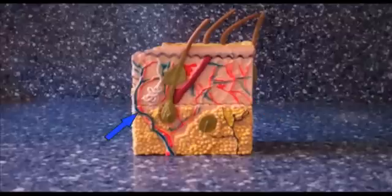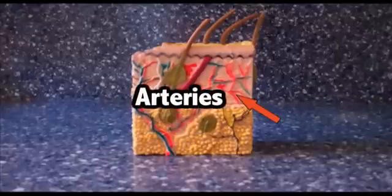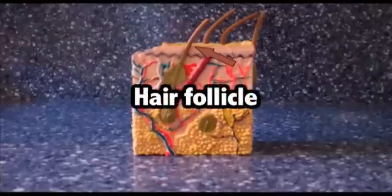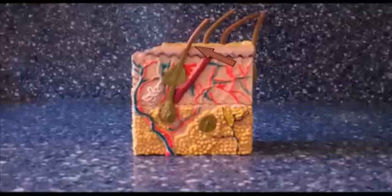These red and blue lines are your veins and arteries. This is like the highway system for your blood. This is a hair follicle. We'll learn more about hair in the next episode.